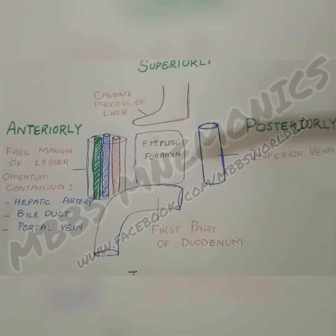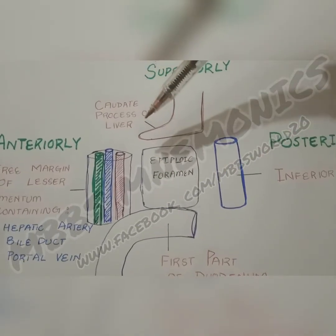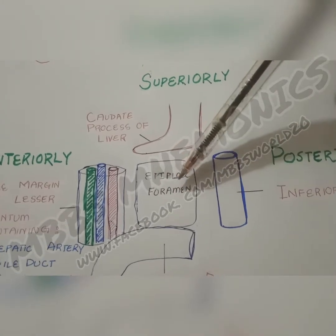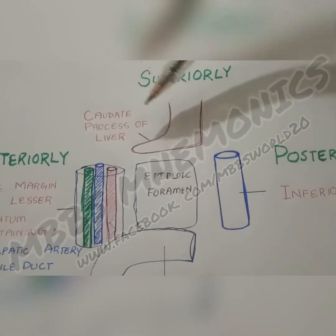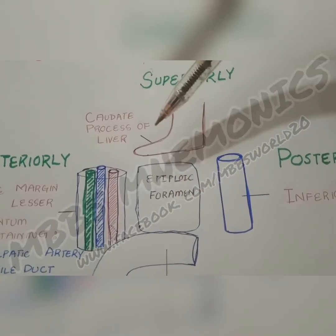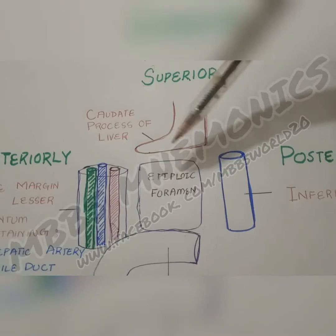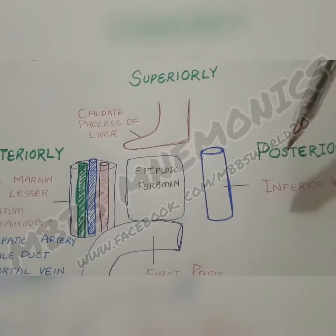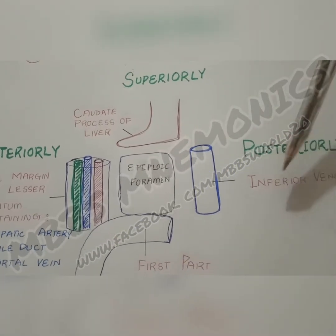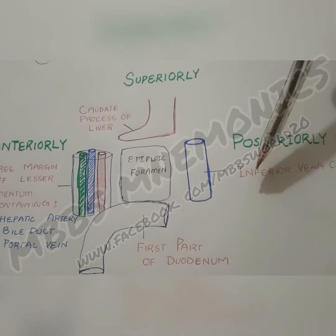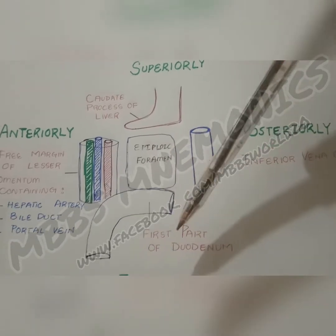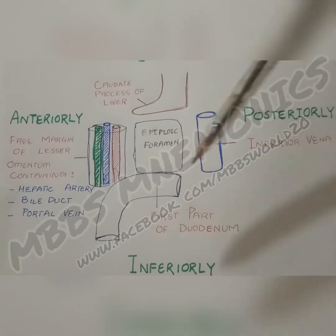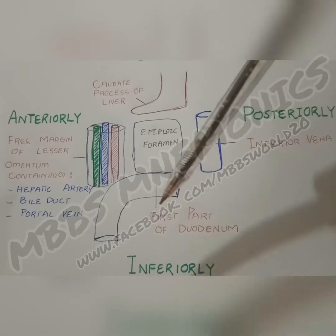Superiorly, the caudate process of the liver is present — this is the epiploic foramen and this is the caudate process of the liver superiorly. Posteriorly, the inferior vena cava is present. Inferiorly, the first part of the duodenum is present.